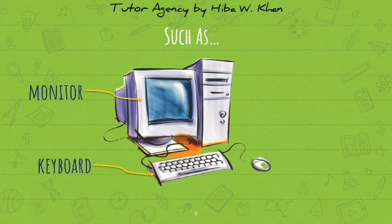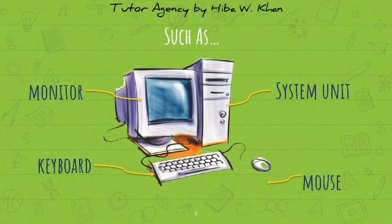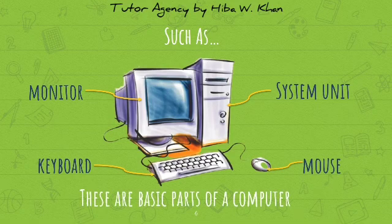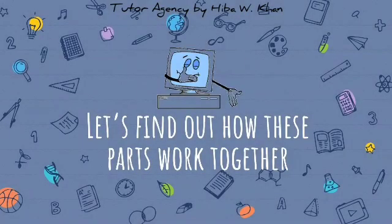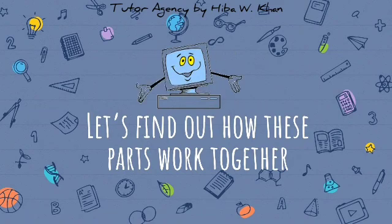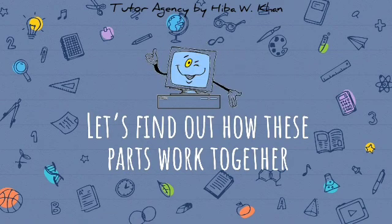Monitor, keyboard, system unit, and mouse — these are basic parts of a computer which we can see and touch. Now let's see how these parts work together.